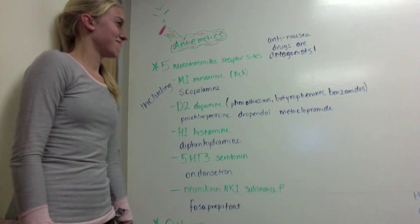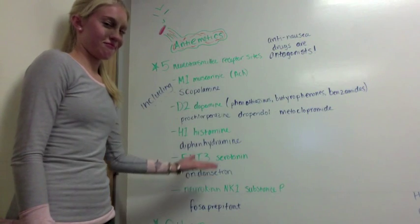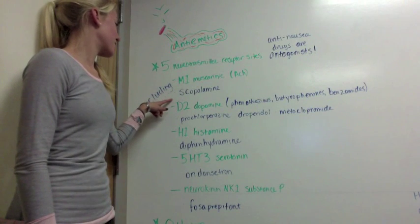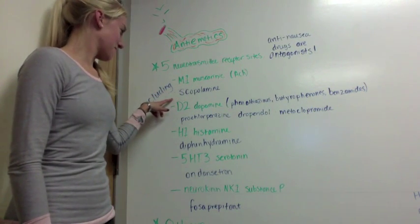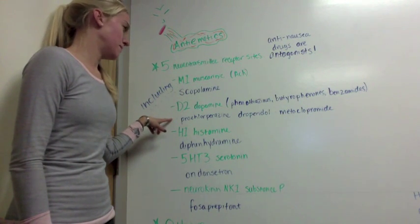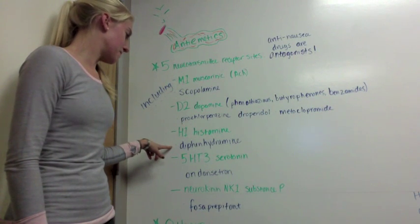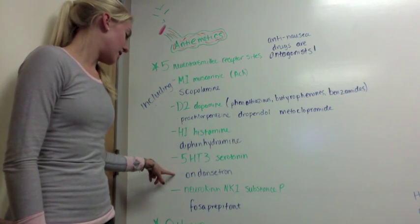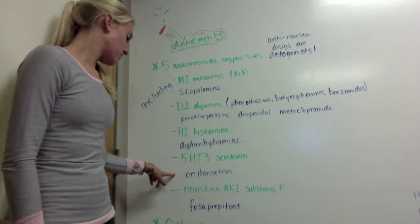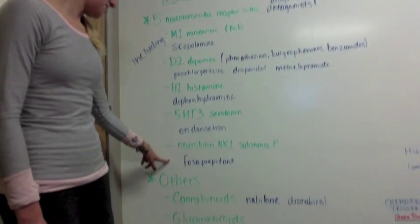There are many drugs that have antiemetic properties. The most common medications target the different receptors in the area postrema. M1 muscarinic acetylcholine receptors, including scopolamine. D2 dopamine receptors, prochlorperazine, droperidol, and metoclopramide. H1 histamine receptors, diphenhydramine. 5-HT3 serotonin receptors, ondansetron. NK1 neurokinin substance P receptors, fosaprepitant.